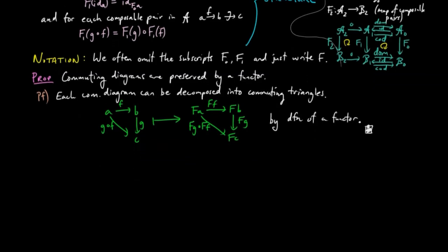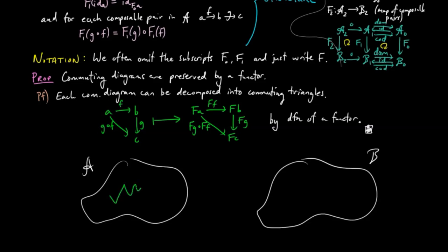it might be helpful to also think of categories as a kind of geometric quasi-topological space where paths are composable morphisms, which are taken to other paths in B by a functor. This viewpoint takes on further significance when we talk about natural transformations.